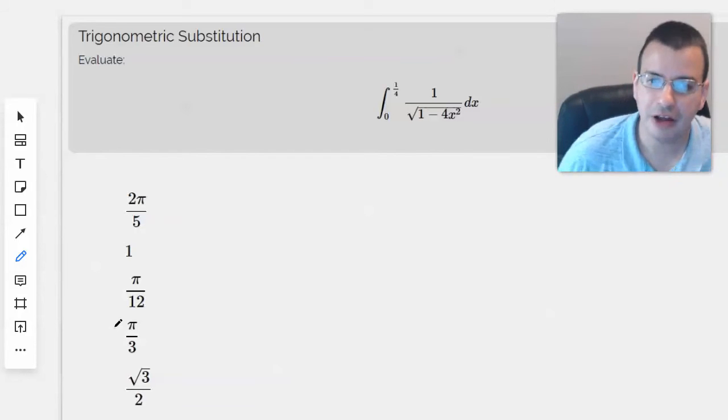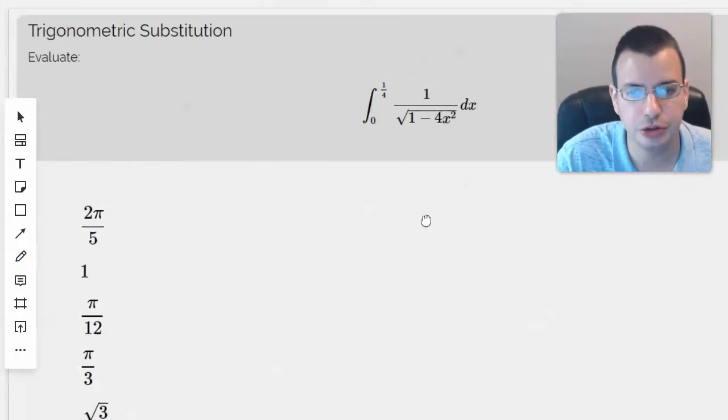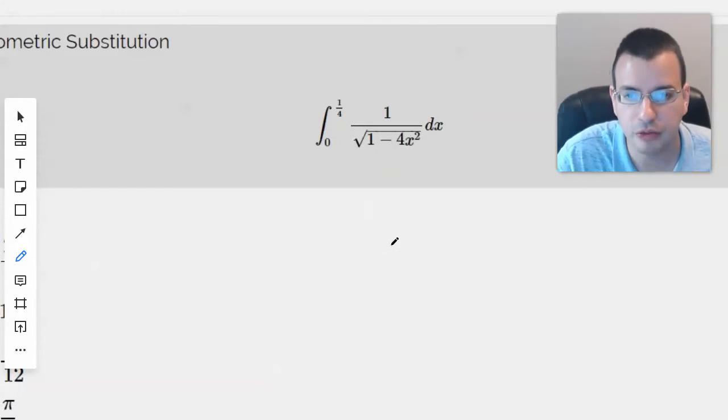Good morning. Evaluate the integral from 0 to 1/4 of 1 over the square root of quantity 1 minus 4x squared.